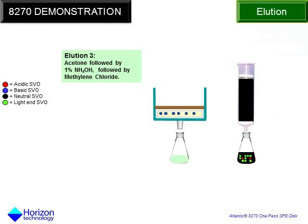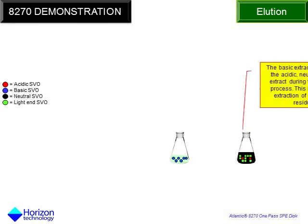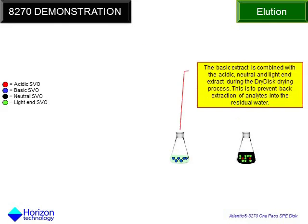The organic bases still remaining on the disc are eluted off into flask two using 1% ammonium hydroxide followed by methylene chloride. The second flask is necessary to keep basic compounds from back-extracting into the acidified extract in flask one. The two flask extracts are combined into one extract while drying with the dry disc membrane. The combined extracts are concentrated down to 1 milliliter using the automatic concentration system of the DrVap system. The extract with internal standards is then transferred to a GC vial for analysis.